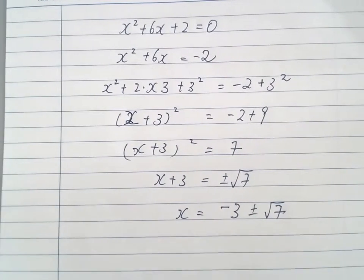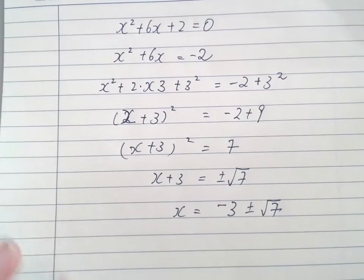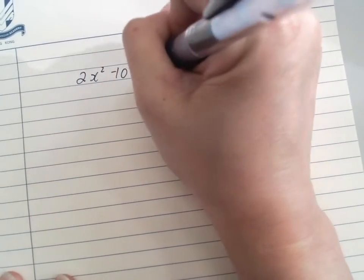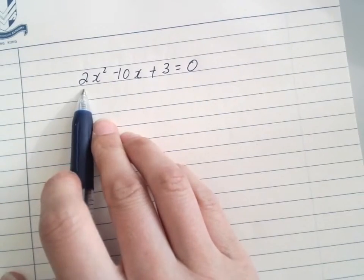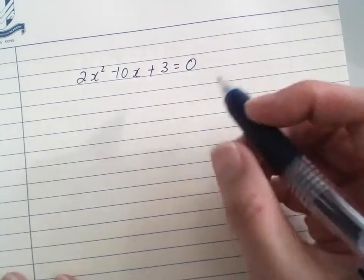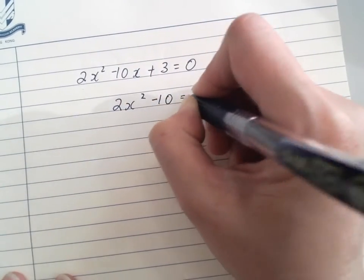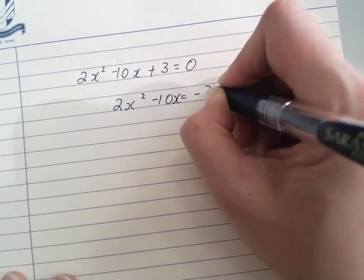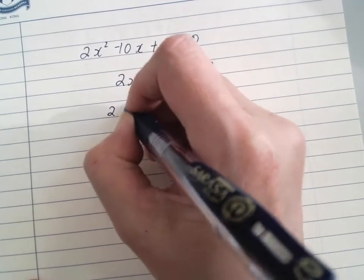But it gets trickier if there's a coefficient in front, so we're going to do that as well. This is the case with a 2 in front. We have 2x²-10x = -3. I want to remove the 2, so I factor it out: 2(x²-5x) = -3.